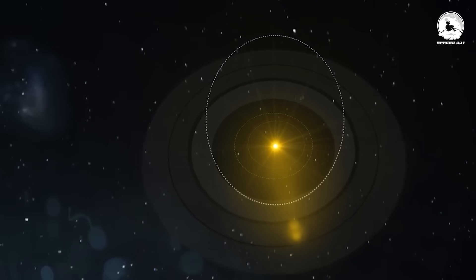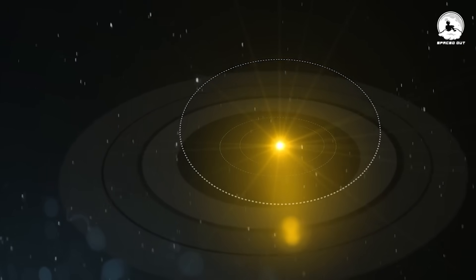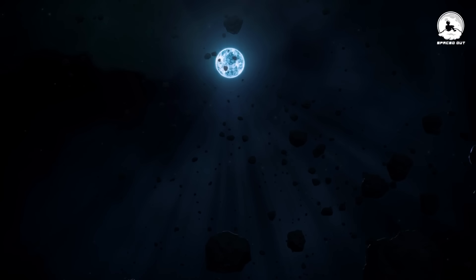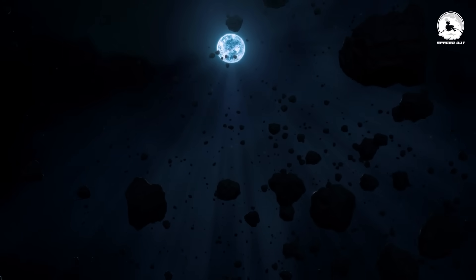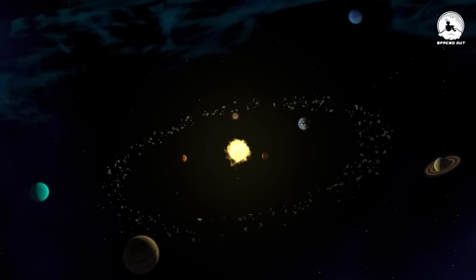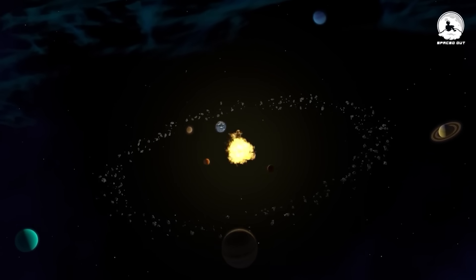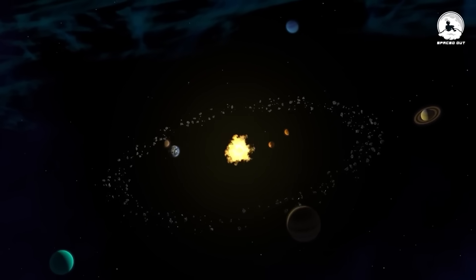The Kuiper Belt has a disordered region called the scattered disk, which continues out to around 1,000 astronomical units away from the solar system's central star. All these numbers depict the Kuiper Belt as one of the solar system's largest structures.